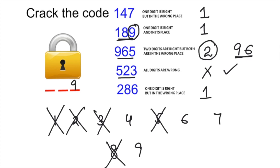Now let's check another number, 286. If you check that, 286, only one digit is right but in the wrong place. We know 2 is not correct, 8 is not correct. So only 6 is correct.